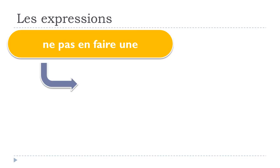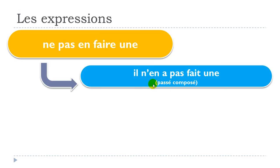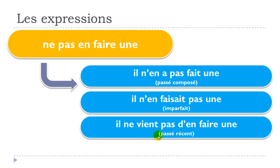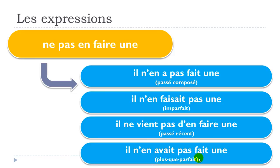Let's see now some past tenses. Passé composé: il n'en a pas fait une. Imparfait: il n'en faisait pas une. Plus-que-parfait: il n'en avait pas fait une.